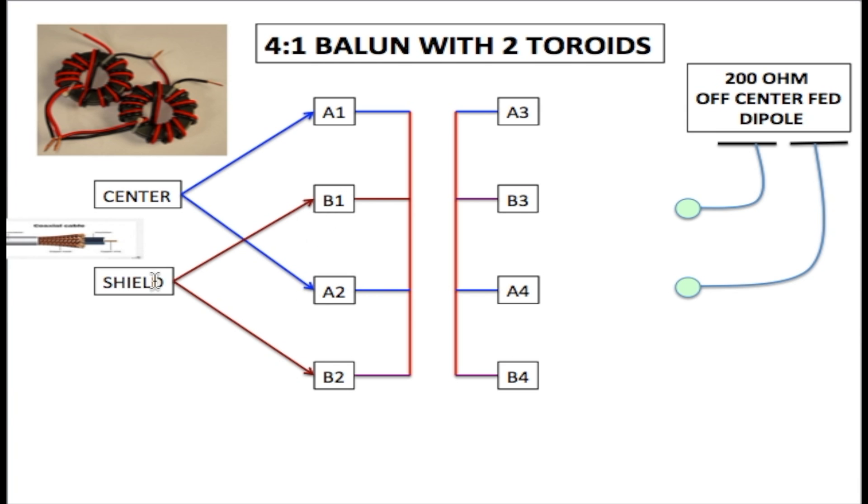Now B1 is connected to the shield and B2 is connected to the shield. B1 on the first toroid, B2 on the second toroid.